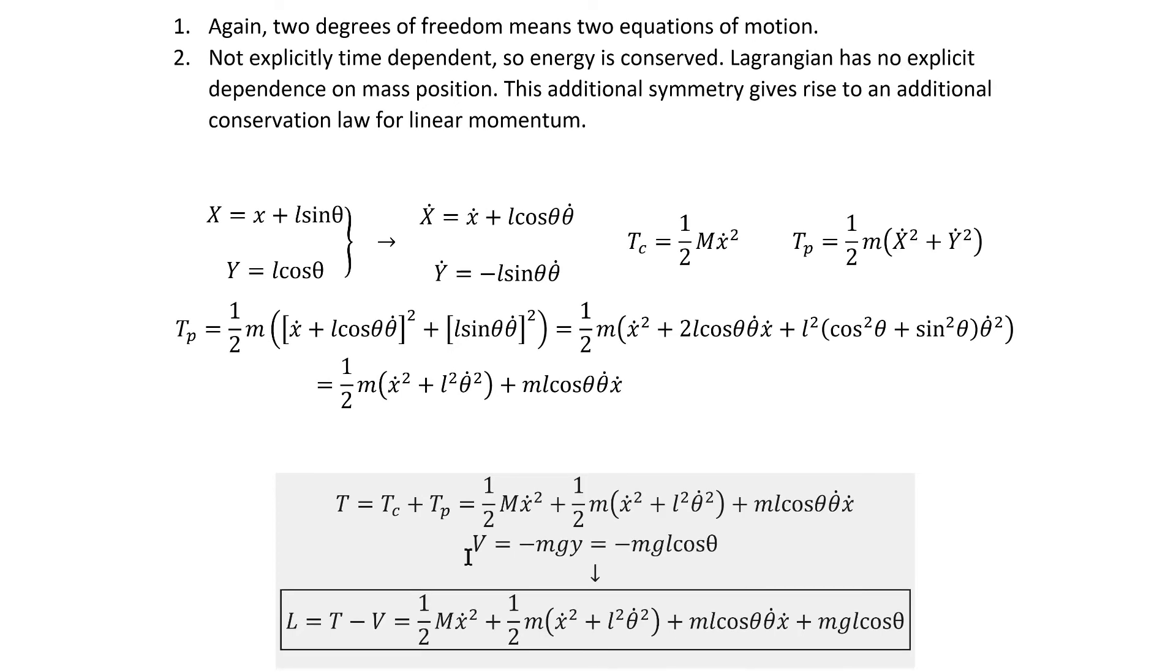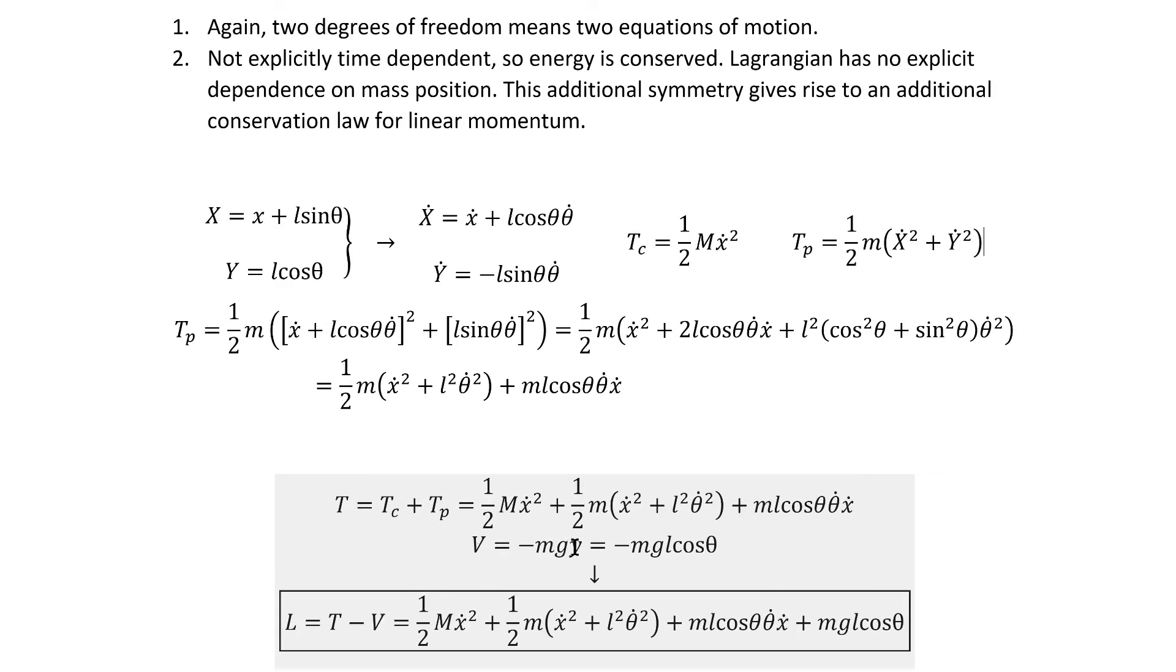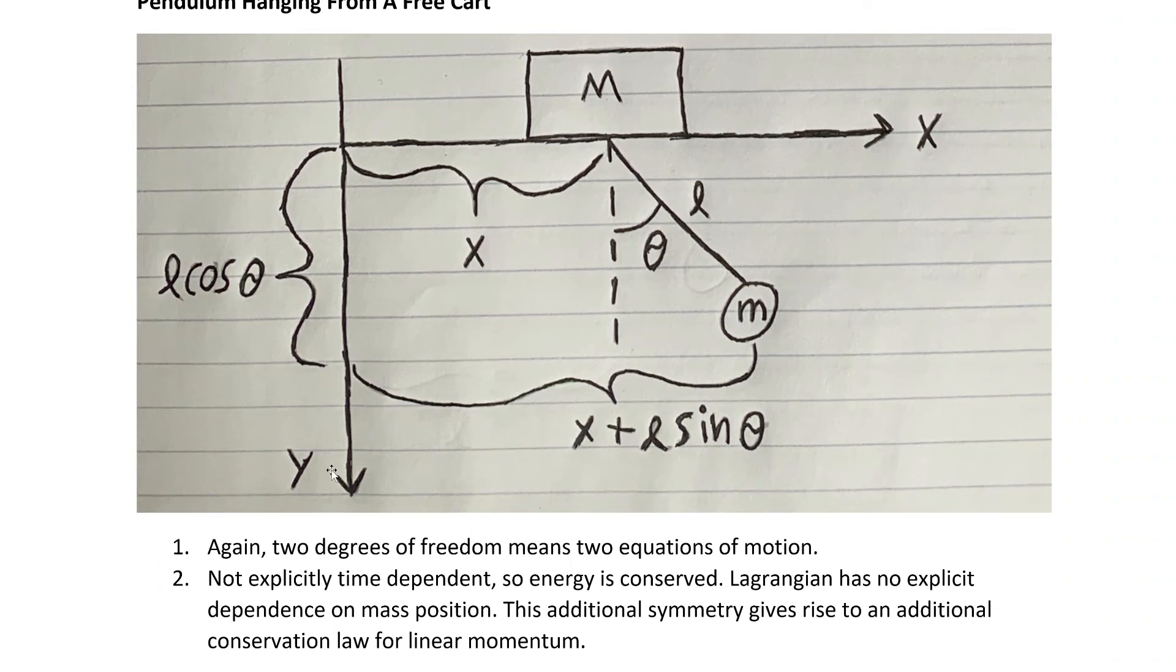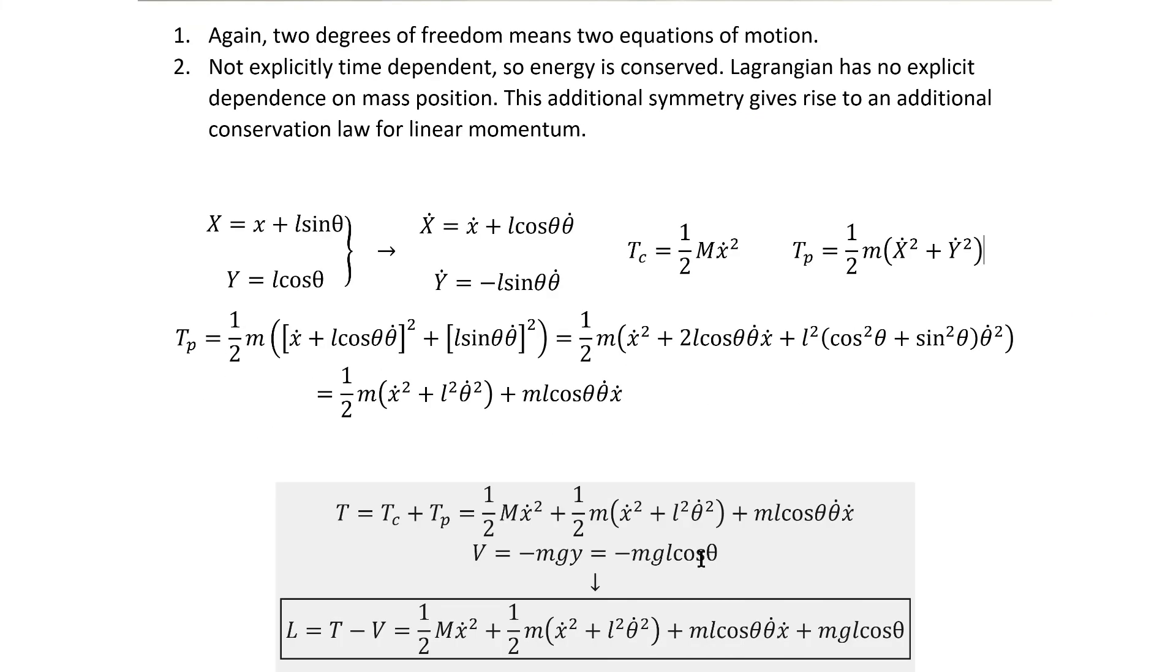The potential energy is a good deal simpler than that. It's simply the gravitational potential energy of the pendulum, where you need to remember to add this minus sign out front because we have taken the positive y-axis to point down. It's then straightforward to express that in terms of the generalized coordinates via the substitutions that we've already sorted out.